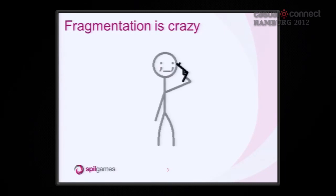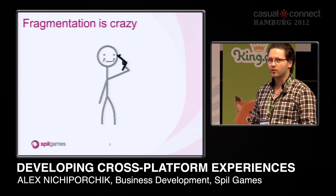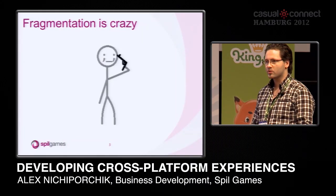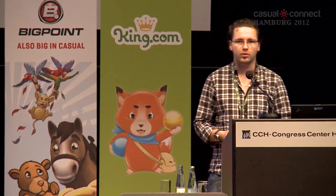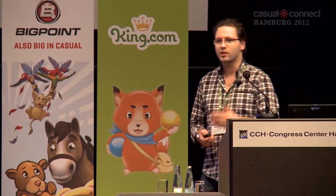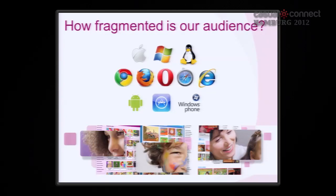Fragmentation is becoming really crazy right now. And we as a company grew because we appeal to everyone. We have websites with mass market appeal. And this means that if we are to go cross-platform, we have a serious issue with appealing to everyone, with delivering the right content to the right people, with easy access and providing a good user experience. So how fragmented is our audience on top of all of the browser and OS fragmentations?